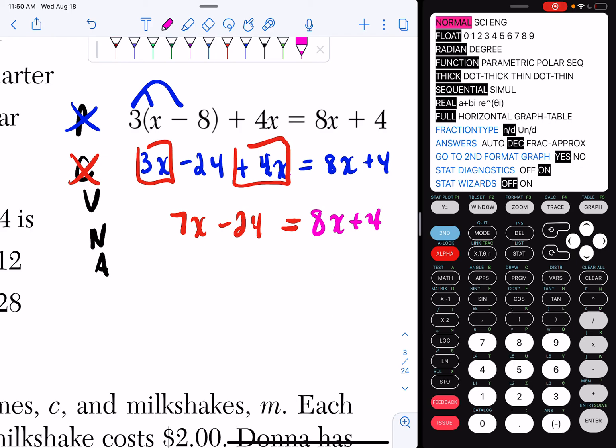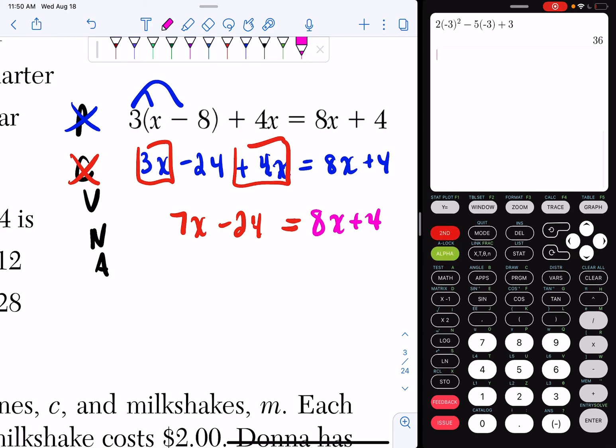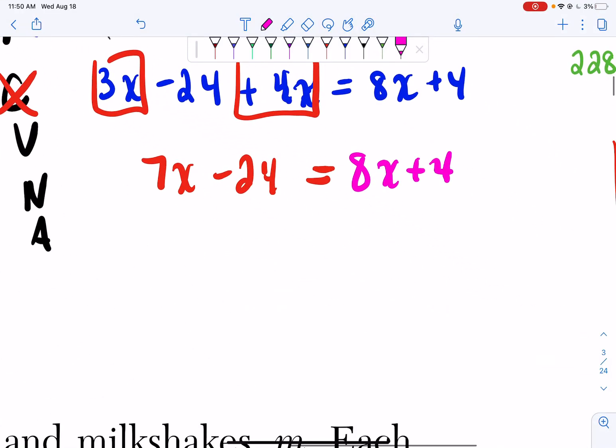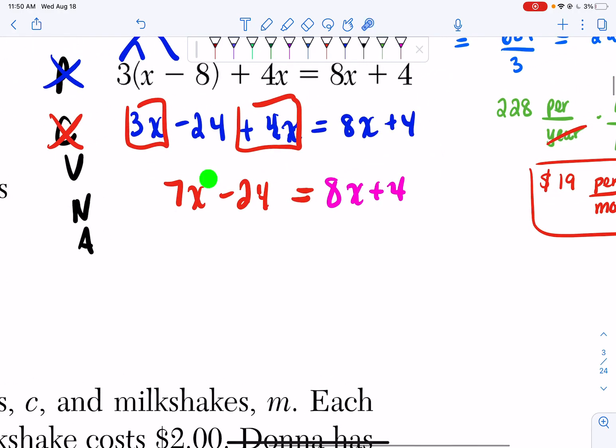So now I have to get all of my variables on one side. I'm going to get my x's to the right-hand side. So I'm going to subtract 7x, subtract 7x, 7x's cancel. So I'm left with negative 24 equals 1x plus 4.